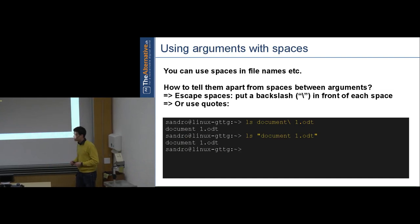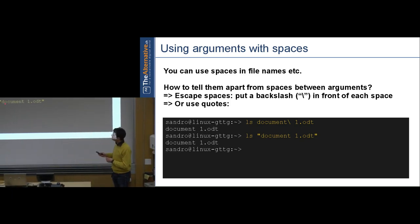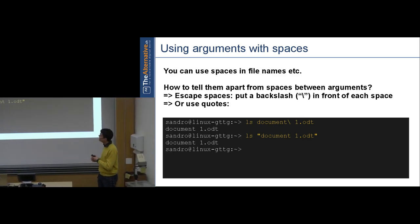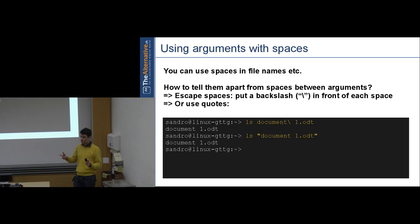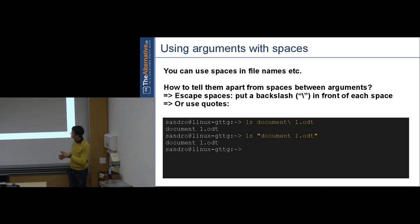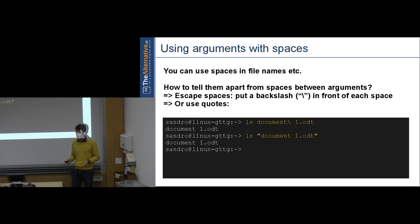For filenames with spaces, there are two ways: put quotes around the name — like 'ls "document 1.odt"' — or escape the space with a backslash: 'ls document\ 1.odt'. Without escaping, the shell would treat 'document' and '1.odt' as two separate arguments.